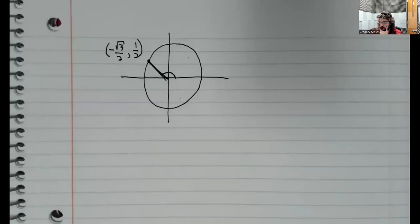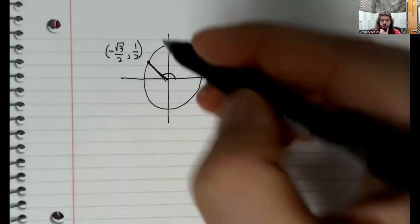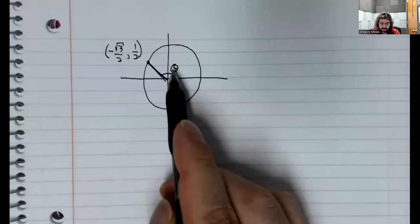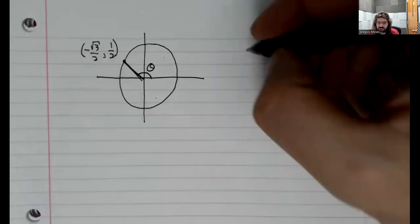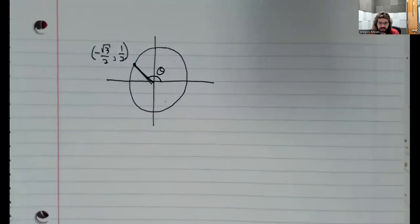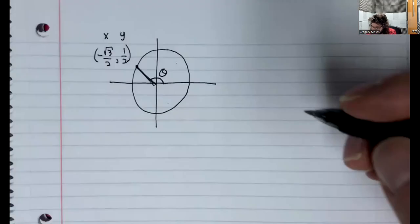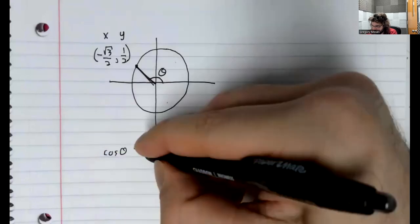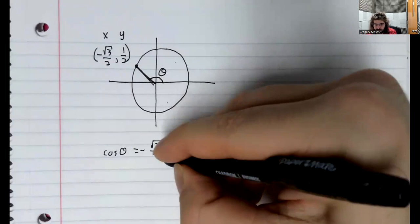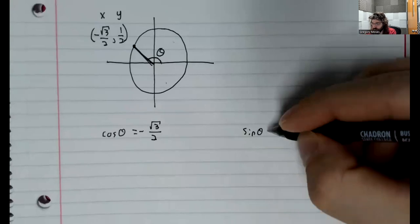So in the first example, we're given a point on the circle, and we're not told what this angle is. But given this point on the unit circle, we can find all six of the trig functions of this unknown angle. So this is the x-coordinate, and this is the y-coordinate. And the cosine of this angle is the x-coordinate. And the sine of this angle is the y-coordinate.